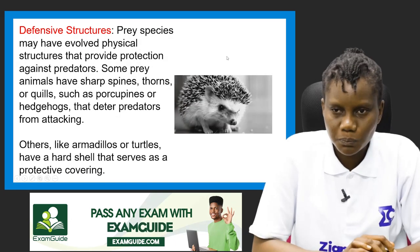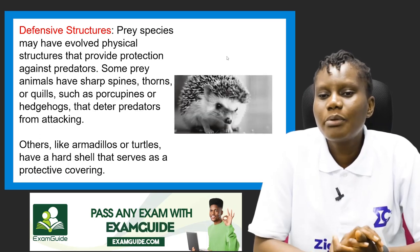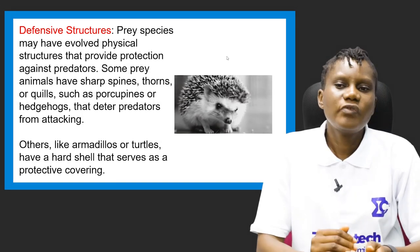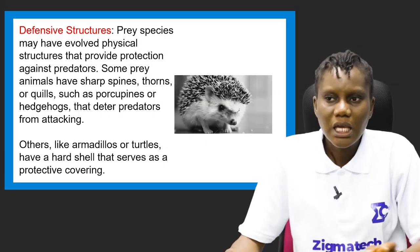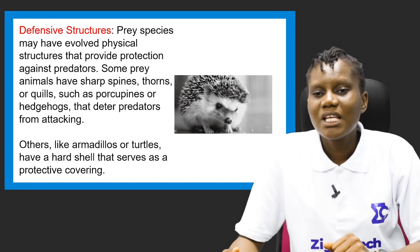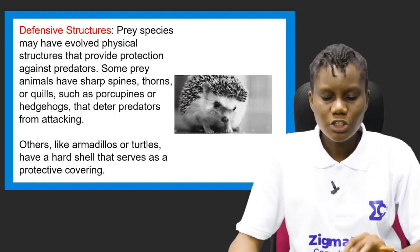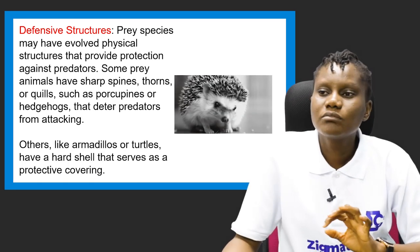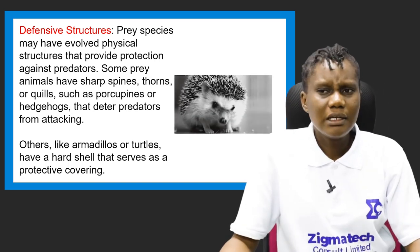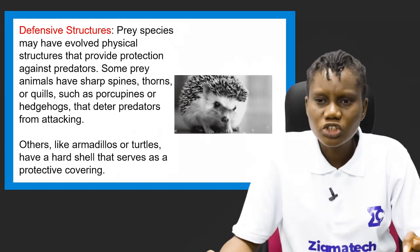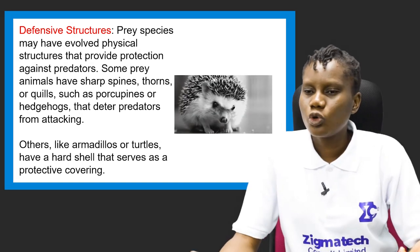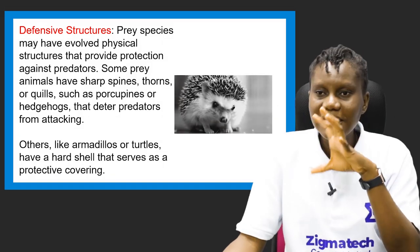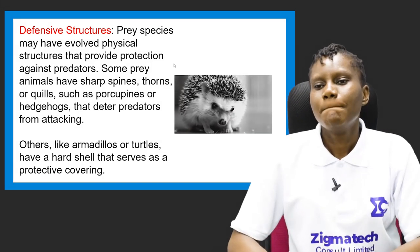The second prey adaptation is defensive structures. Prey species may have evolved physical structures that provide protection against predators. For example, hedgehogs or porcupines have thorns on their body — if a predator tries to feed on them, those thorns will hurt and deter the predator. Turtles have strong, very hard shells that some animals cannot crush, so predators simply leave them alone.